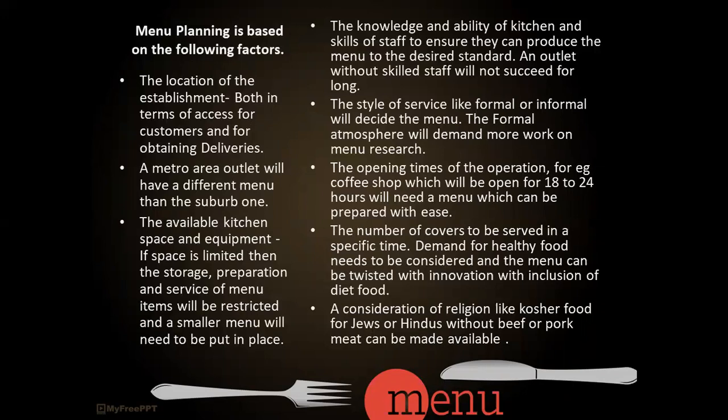Menu planning is based on the following factors. The first is the location of the establishment, which is important both for customer access and for obtaining deliveries. A metro area outlet will have a different menu than a suburban one due to different demographic market requirements. Available kitchen space and equipment is absolutely important — if space is limited, storage, preparation, and service of menu items will be restricted, and a smaller menu will need to be put in place. The knowledge, ability, and skill of kitchen staff to ensure they produce the menu to the desired standard is also critical. An outlet without skilled staff will not succeed for long.